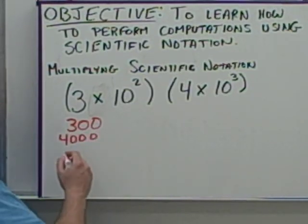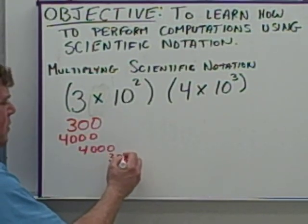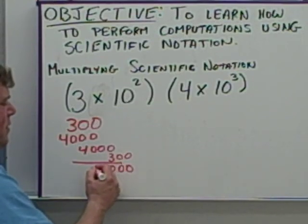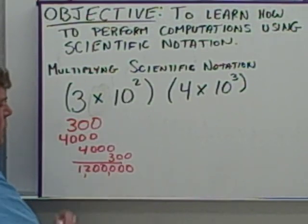Well, multiplying those two numbers, I'd probably rearrange this so that it was like this. And I'd have 0, 0, 0, 0, 0, 12. So I would end up with 1,200,000.